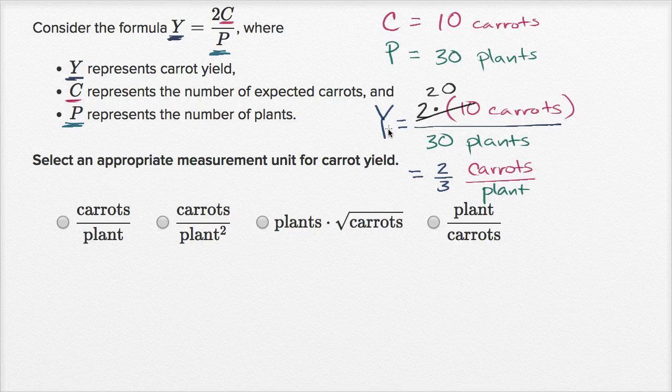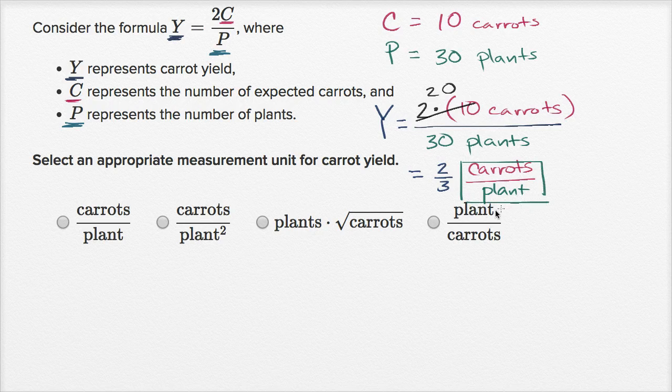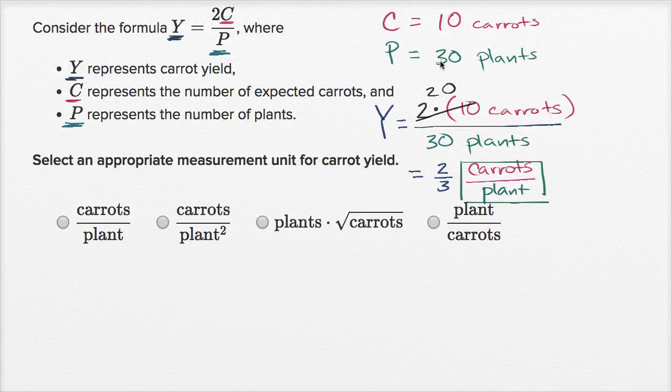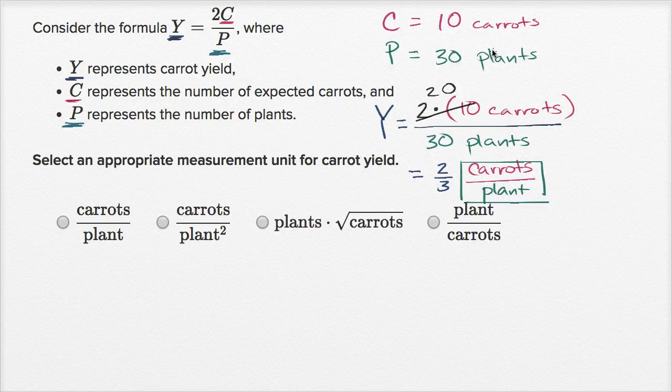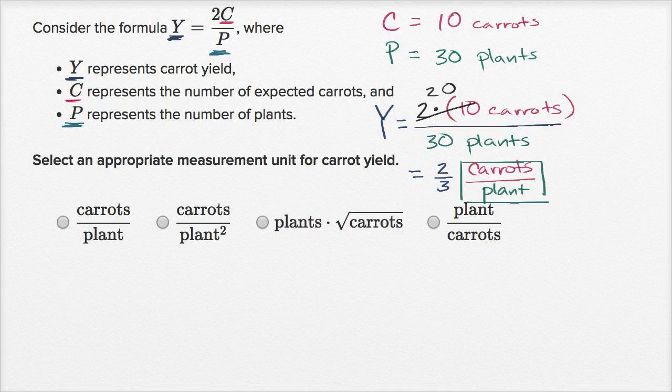And once again, the whole point of what I just did is to see what the units would be for our carat yield. And we can see the units would be carats per plant. And I put the numbers there, just so hopefully it makes a little bit of intuitive sense of what we just did. That as we algebraically or mathematically manipulate the numbers, we do the same thing with the units. And so when we try to find the appropriate measurement unit for carat yield, which I had never heard of before this video, we see it's carats per plant is the appropriate measurement unit.